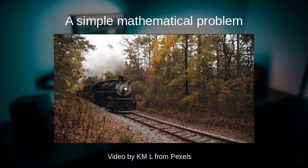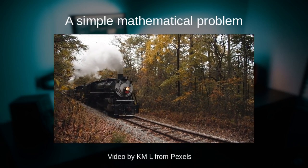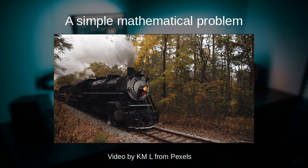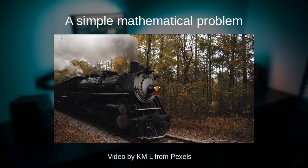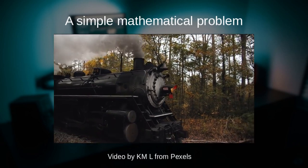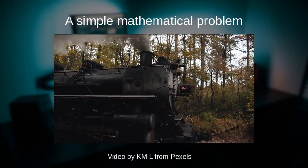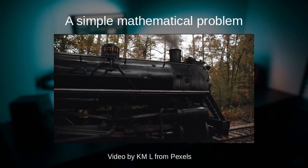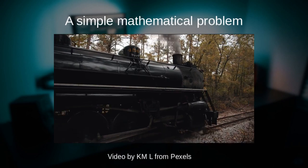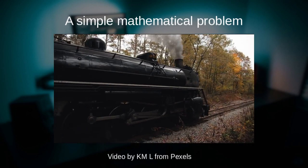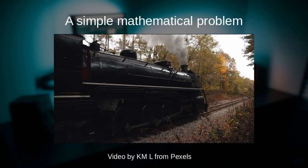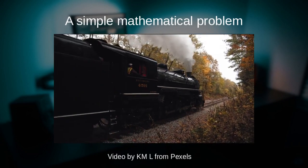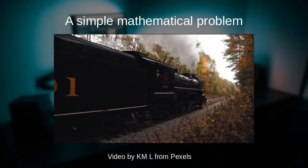Let's have a look at a simple mathematical problem: the train meet problem. Let's say that we have two trains going out from cities A and B towards each other at different speeds. We don't specify speeds or distances at the moment. The question is when and where the trains will meet before continuing on their way.